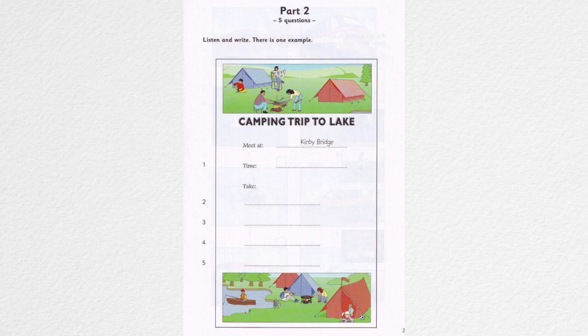What about a torch, miss? Yes, that's very important because there aren't any lights in our tents. Now, what else? I know, the farmer is going to let us use the showers at the farm. Isn't that kind? So, you will all need to bring a towel with you.